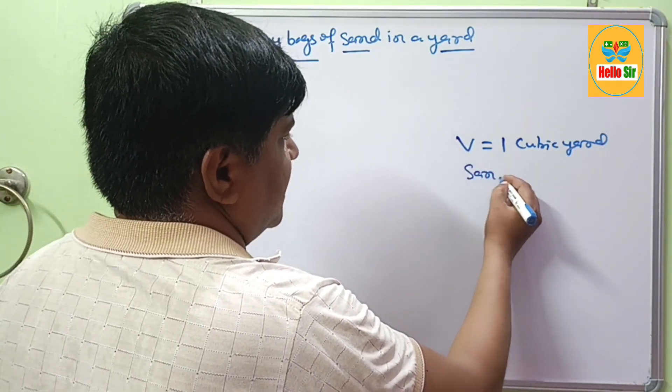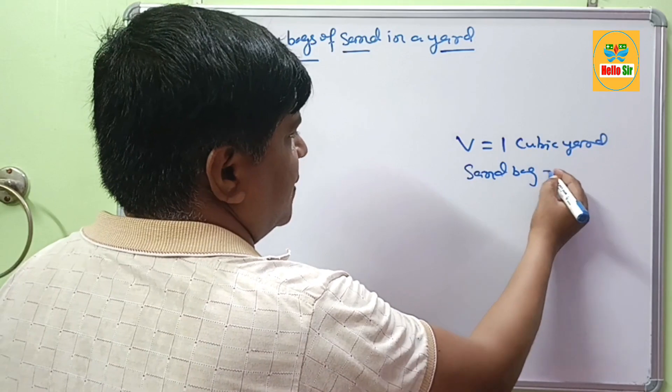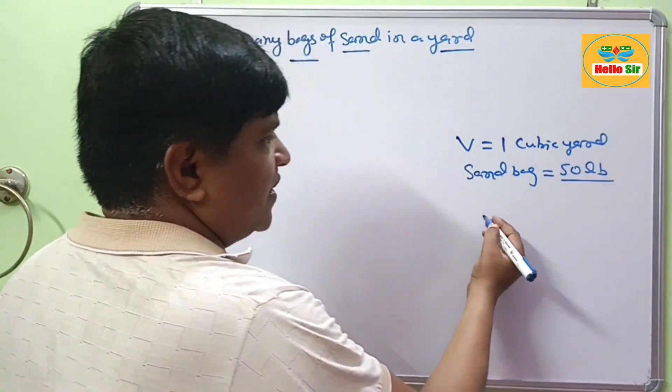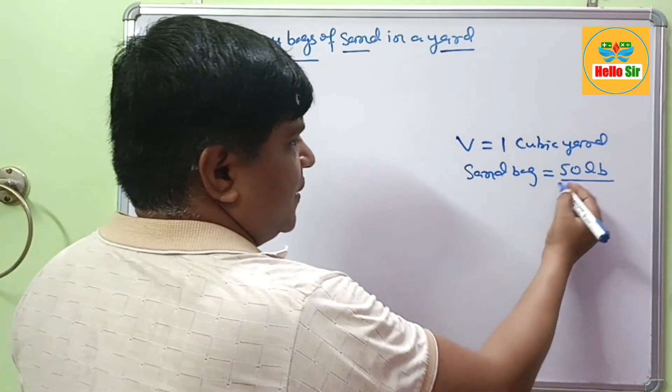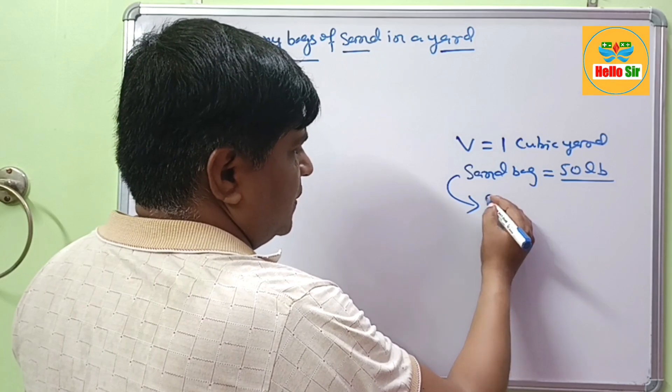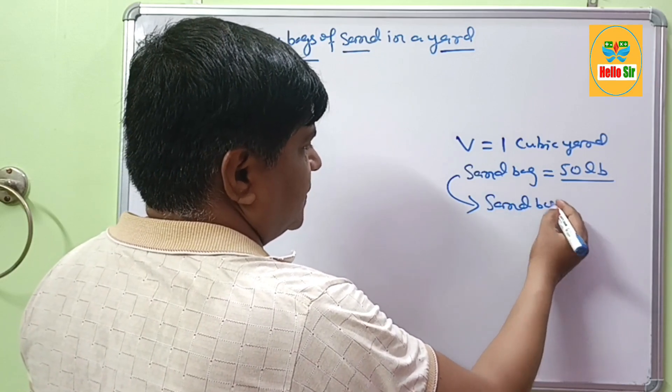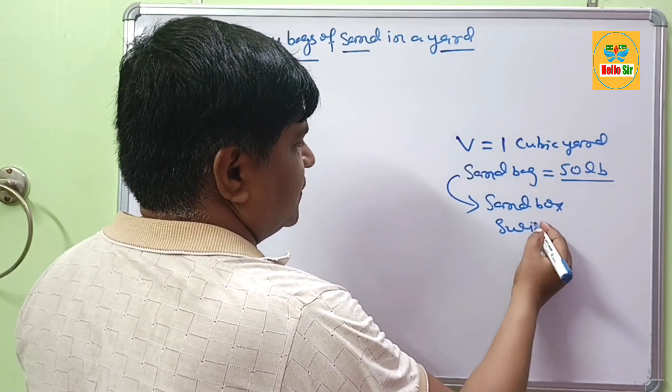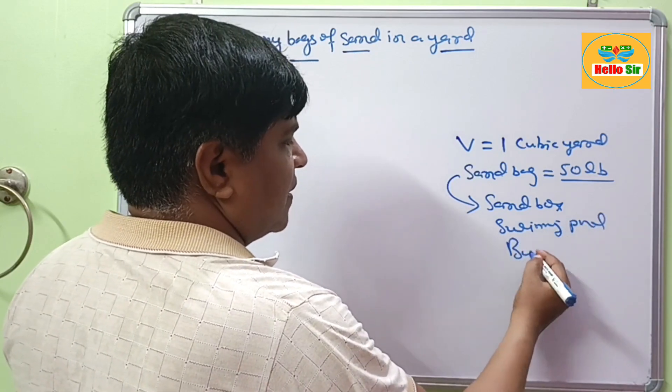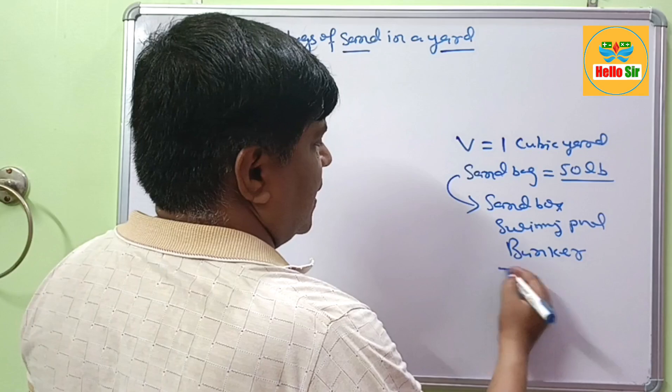The sand bag usually comes in 50 lb, which means the weight of 1 sand bag is about 50 pounds. The sand bag is used for sandbox, swimming pools, making military bunkers, and for other purposes.